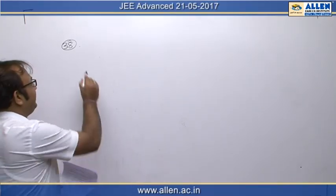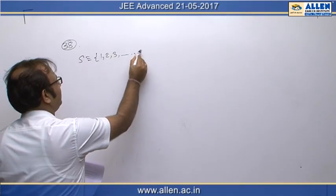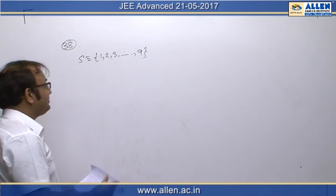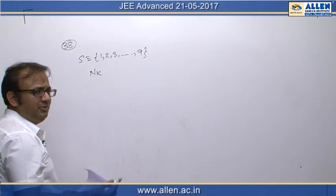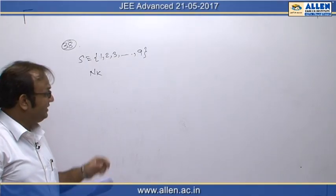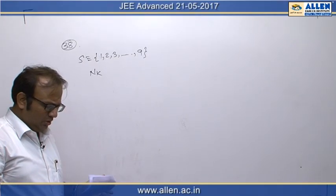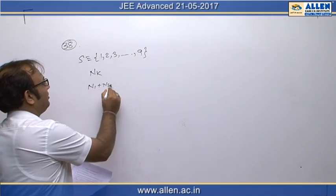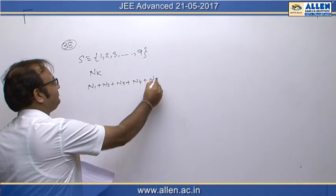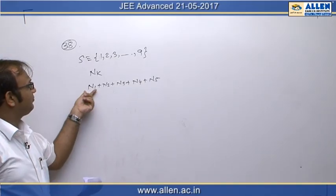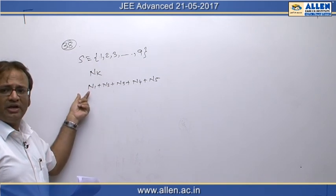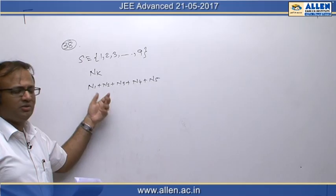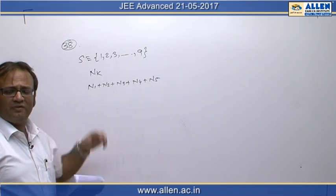In question 38, set S is the set of first 9 natural numbers. k varies from 1 to n, and n_k is defined as the number of subsets of this set with 5 elements which contain exactly k odd numbers. We need to find n1 plus n2 plus n3 plus n4 plus n5. n1 means a subset of 5 elements having exactly 1 odd number, and so on up to n5 having exactly 5 odd natural numbers.